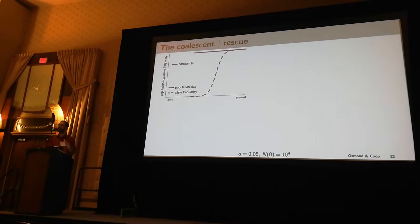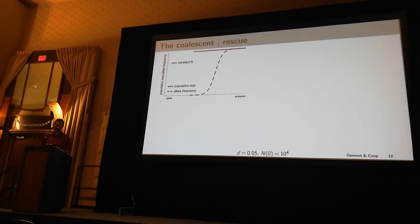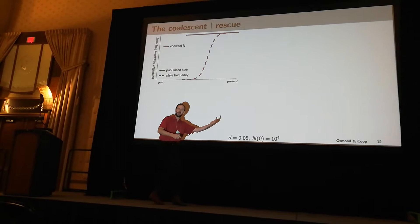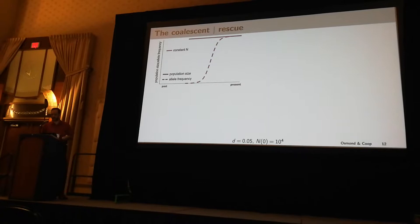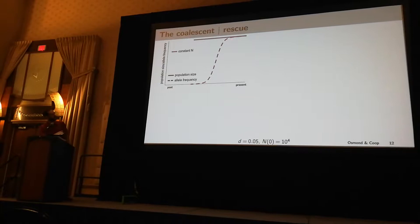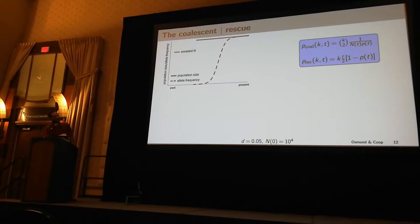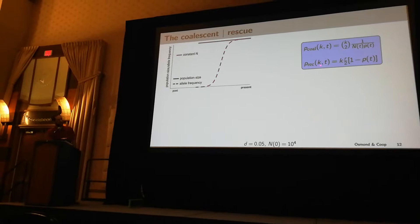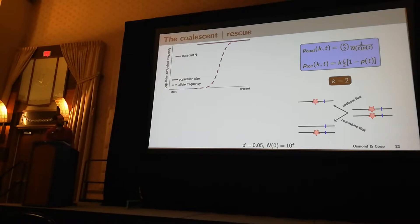Those are the forward-time dynamics. Now to predict the genetic signatures that these processes leave in genomes, we need to put on our coalescence glasses and think backwards in time. So before we were going forward in time; this slide is going to be backwards in time, right to left. Here's the case of the constant population size, the sweep, and the population size. Given these dynamics, we can calculate the rates of coalescence and recombination in a given generation T, given that we have k lineages present in that generation.